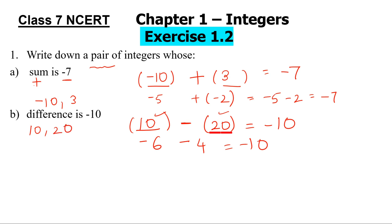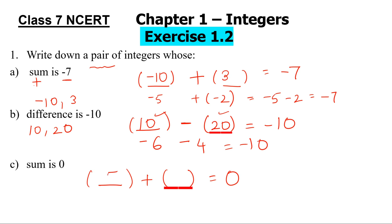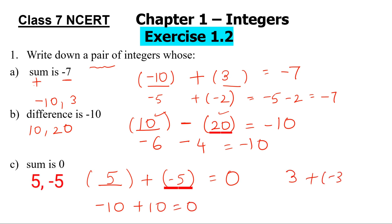Next one: sum is 0. We have to add two integers so that the sum is 0. For this question, you can take any number and add the opposite of that — that means adding the number and its additive inverse. For example, if I take 5 it would be minus 5. Minus 10 plus 10 is 0, or 3 plus minus 3 is 0.